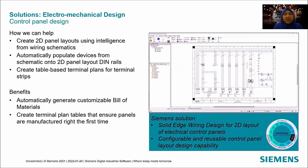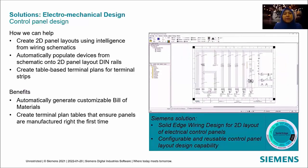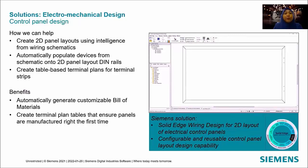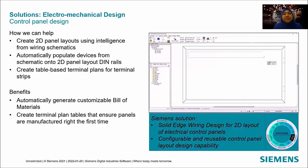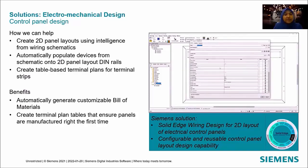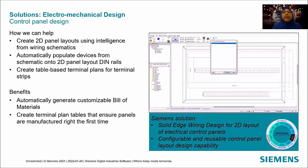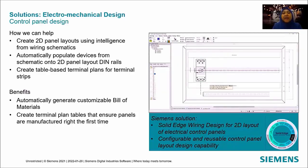Solid Edge also has a solution for control panel design, where you can create 2D panel layouts using intelligence from the wiring schematic and automatically populate devices from the schematic into the 2D panel. You can create a table-based terminal plan for terminal strips, generate customizable bills of material automatically, and ensure panels are manufactured right the first time.